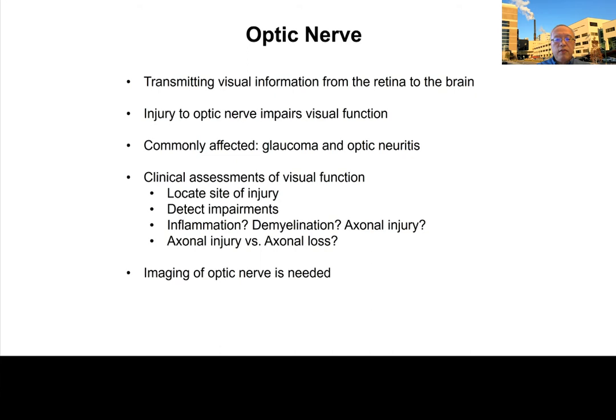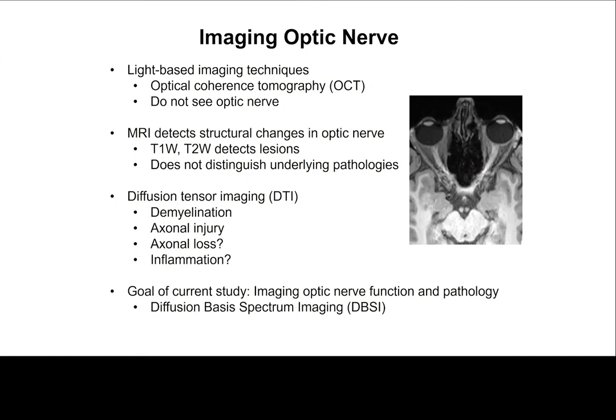Imaging the optic nerve is needed and very important in terms of patient management. There are many different methods to image the optic nerve. One of the most commonly used techniques is OCT — a light-based imaging technique — but unfortunately you can only image structures intraocularly, so it does not reach the later part of the optic nerve. To image the optic nerve effectively, MRI would be the best method because there is no limitation on penetration depth.